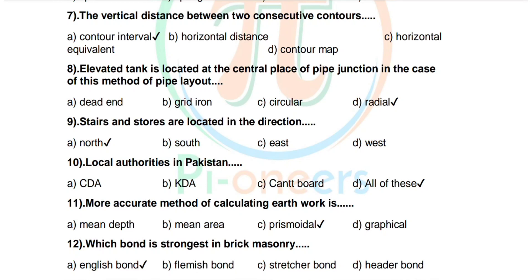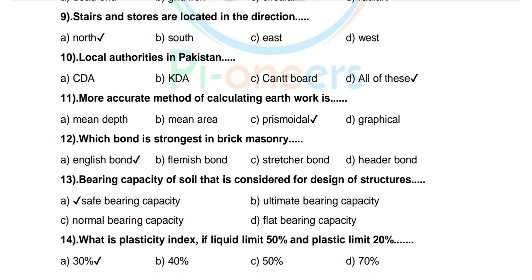Question 13: The bearing of the best soil that is considered for design of structure. Options: safe bearing capacity, ultimate bearing capacity, normal bearing capacity, flat bearing capacity. Correct answer is safe bearing capacity. Question 14: What is the plasticity index if liquid limit is 50% and plastic limit is 20%? Options: 30, 40, 50, 70. Correct answer is 30 percent.